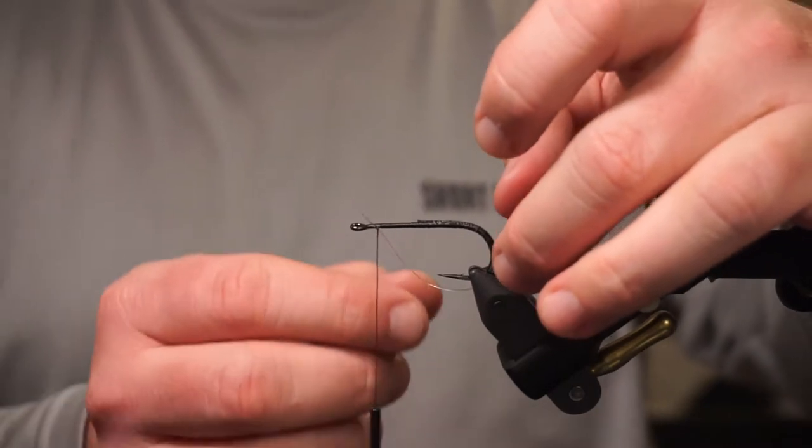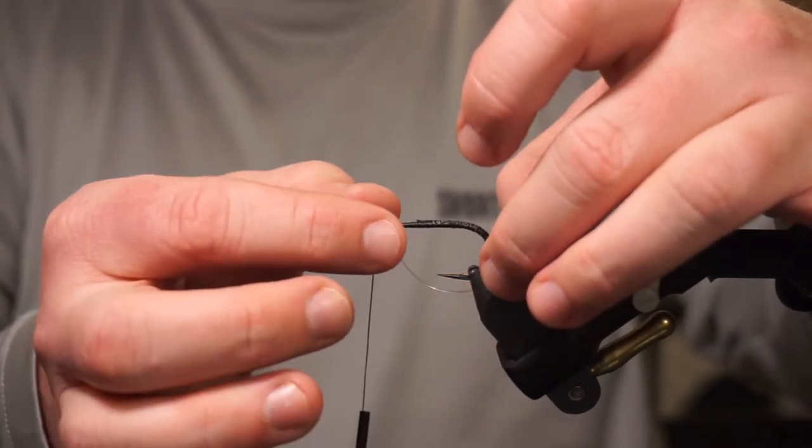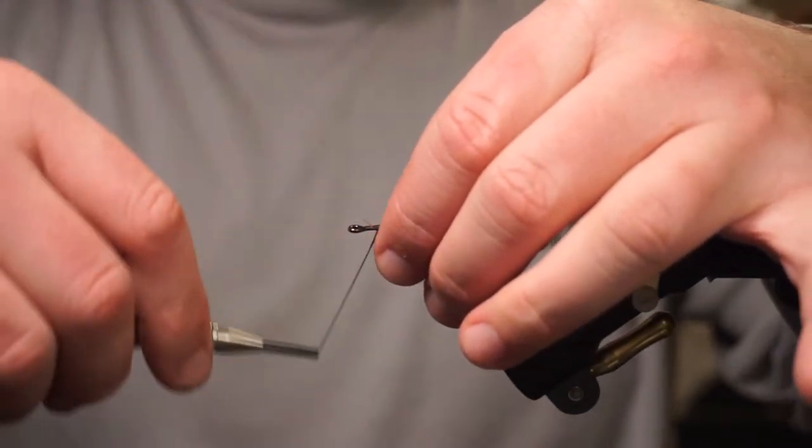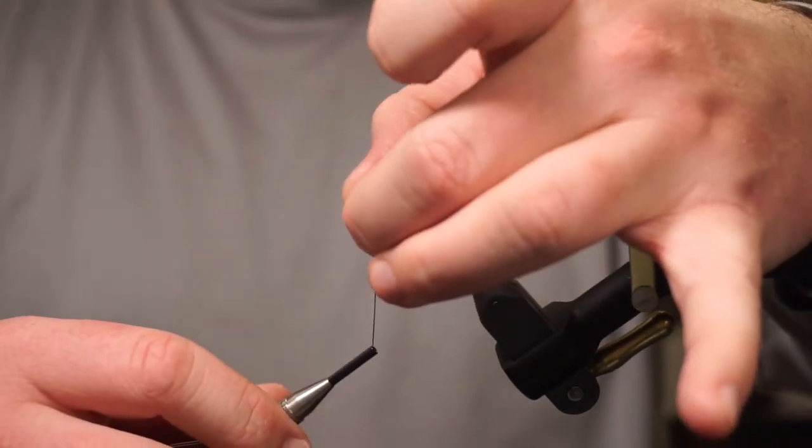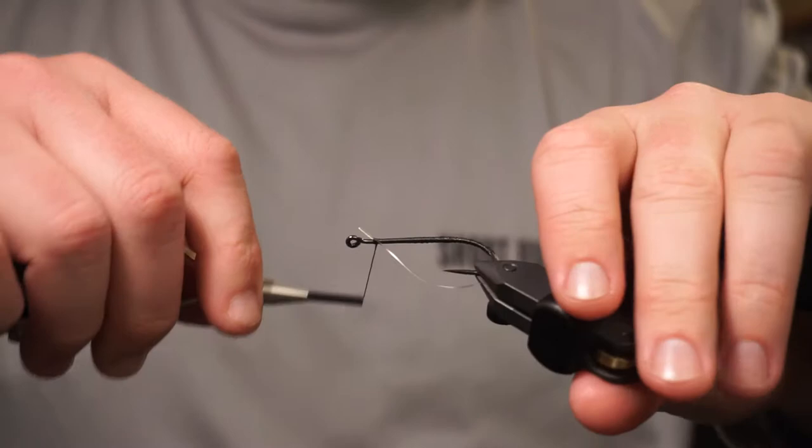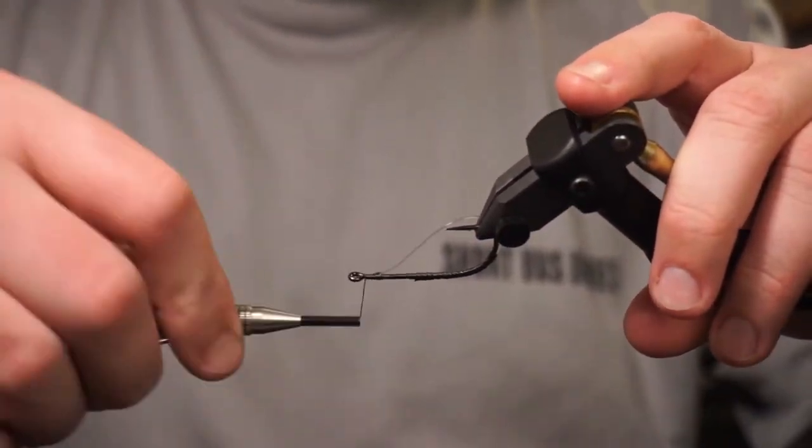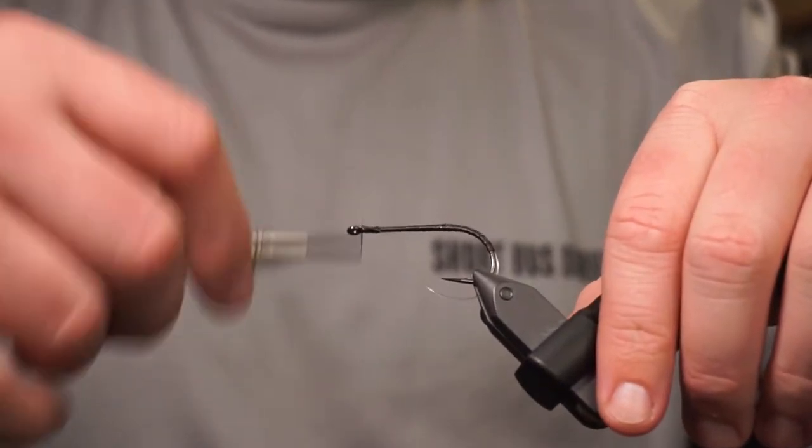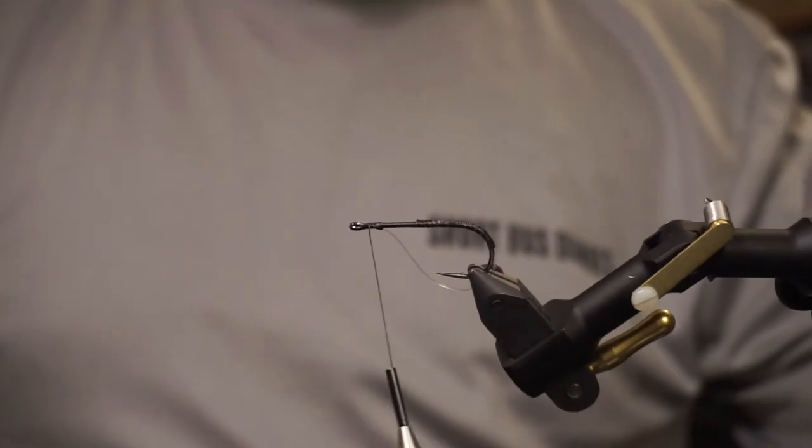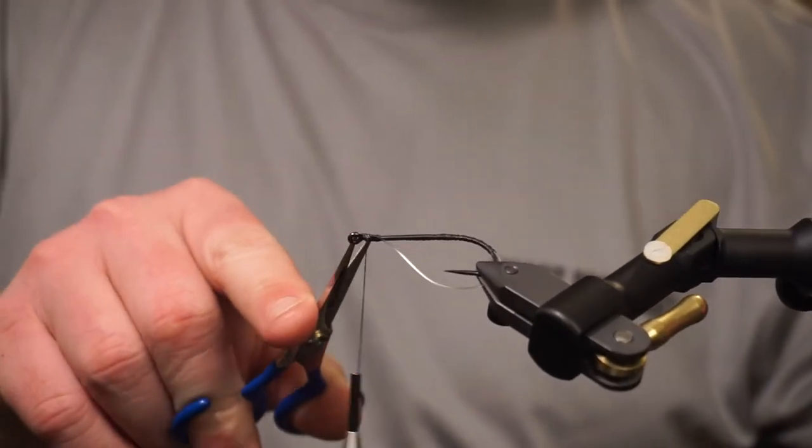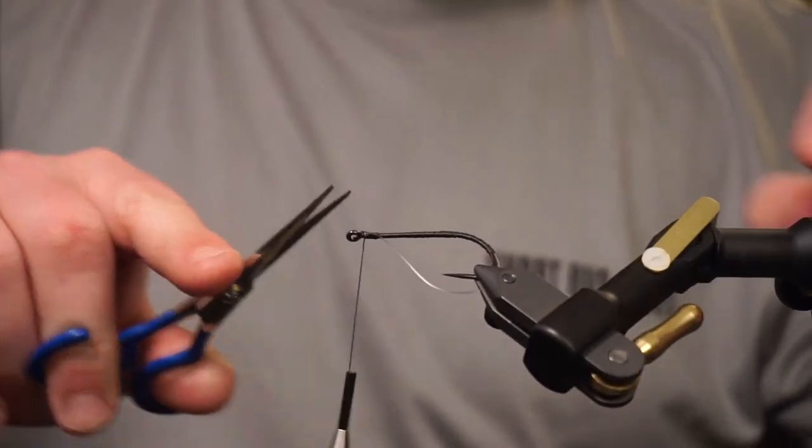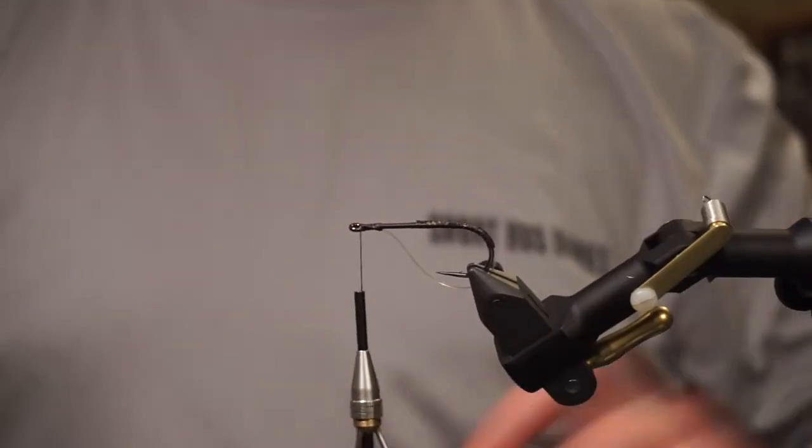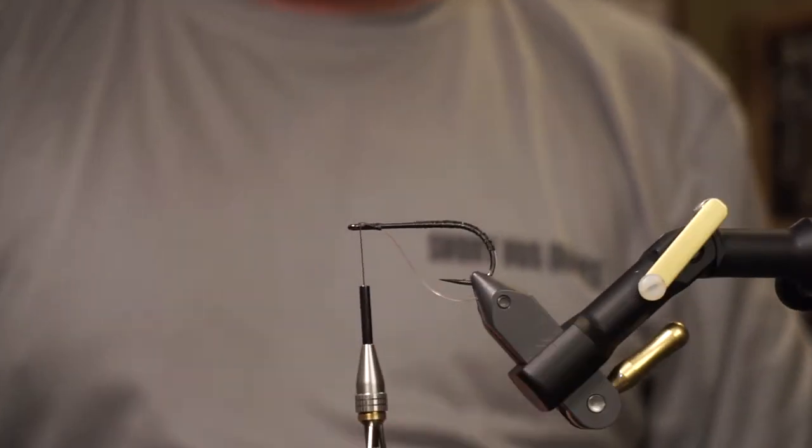You don't want it to be too tight, but you don't want it to be too loose either. If it's too tight it's going to be hard to hook fish. If it's too loose it's not going to do its job. You want it to look about like that. Once you get it where you need it, we're just going to finish that up and trim that out.